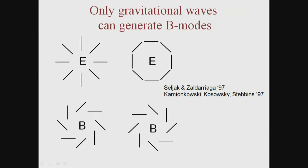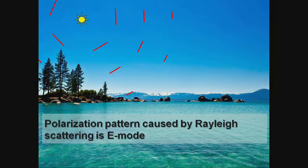We don't try to directly measure the spacetime metric; instead we search for a pattern in CMB polarization. It was proposed that you look for a curl component in the linear polarization of the microwave background. A radial or circular pattern is called E-mode or gradient mode, and the curling pattern is known as the curl mode or B-mode — analogous to electromagnetism.